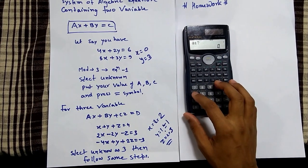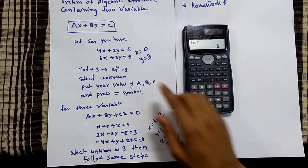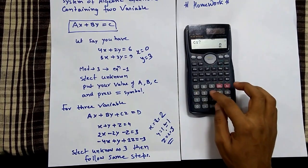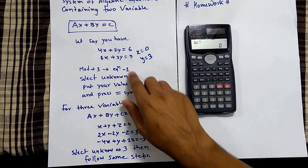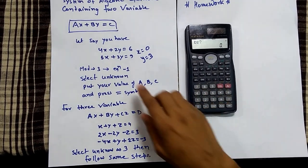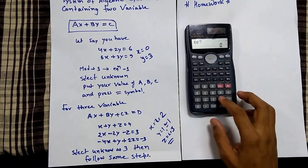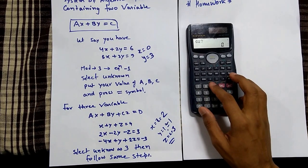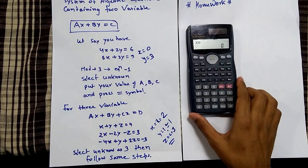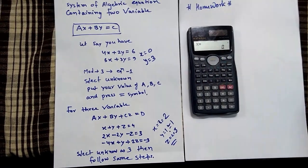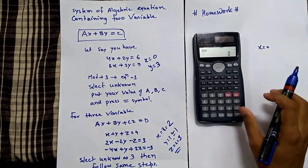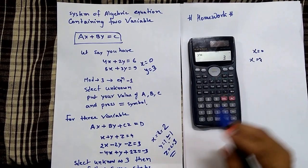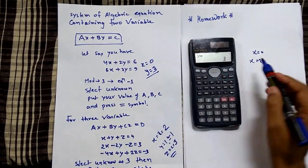For the first equation: a1 is 4, b1 is 2, and c1 is 6. For the second: a2 is 5, b2 is 3, and c2 is 9. So you will get x equal to 0 and y equal to 3.